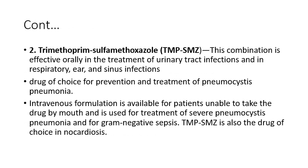Next are the uses of trimethoprim and sulfamethoxazole — the combination of both these drugs. This combination is effective orally in the treatment of urinary tract infections and in respiratory, ear, or sinus infections. This combination is the drug of choice for prevention and treatment of Pneumocystis pneumonia, caused by Pneumocystis jirovecii. IV formulation is available for patients unable to use the drug by mouth, used in the treatment of the same conditions. It is also the drug of choice in giardiasis.